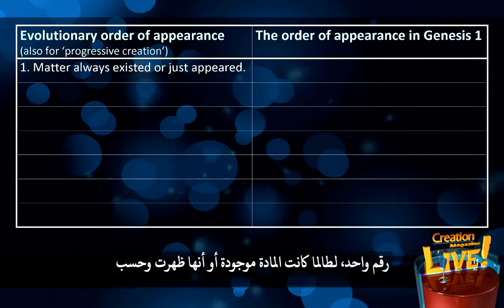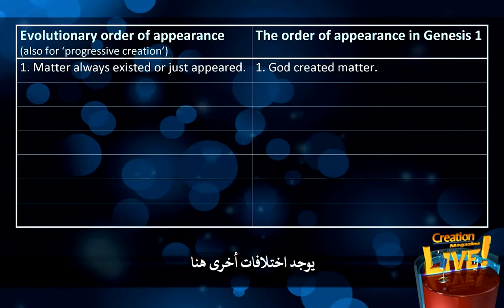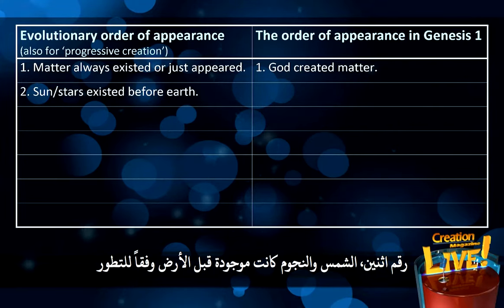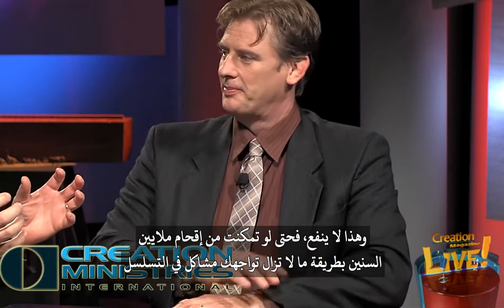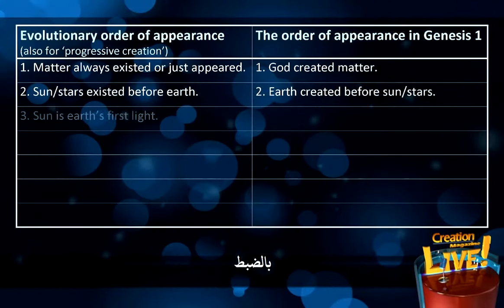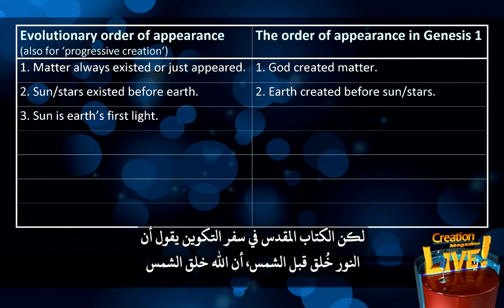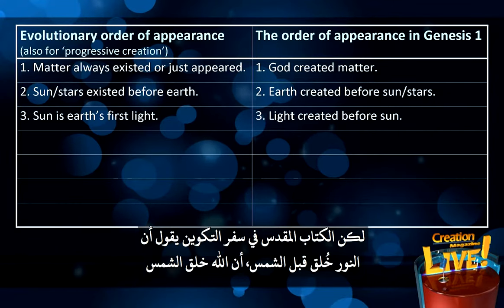Let's look at contradictions in the sequence of events. In evolution, matter always existed or just appeared; the Bible says God created matter. Evolution says the sun and stars existed before the earth; the Bible says the earth was created before the sun, moon, and stars — which contradicts the Big Bang. Even if you could fit millions of years in somehow, you've still got sequencing issues. Evolution says the sun is Earth's first light, but Genesis says light was created before the sun. In Revelation, God provides the light in the restoration — we're not given details about the light source in the first three days of creation, but that's a reasonable parallel.